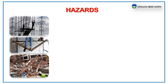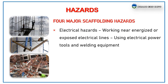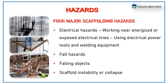What are the scaffolding hazards? There are 4 major scaffolding hazards. 1st, electrical hazards: working near energized or exposed electrical lines, using electrical power tools and welding equipment on scaffold. 2nd, fall hazard. 3rd, falling objects. 4th, scaffolding instability or collapse.